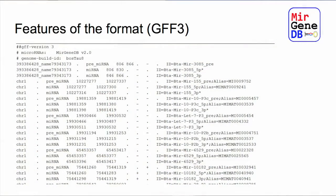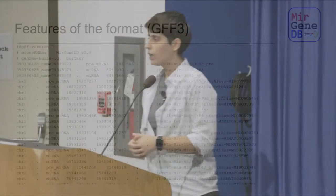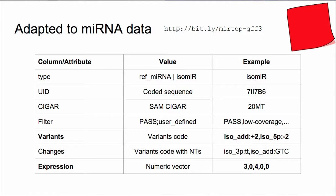We didn't invent something from scratch — we reused standard formats. We adapted GFF3, and GTF can work as well. This is an example from MirGinDB: the first columns contain information about positions and the source database, while the last column — attributes — is where we adapted things to fit our data. If you want to know all the attributes, you can go to MIRTOP-GFF3 for the full description. The two most important attributes are the variance, which defines the isomirs when compared to the database reference, and the expression of the samples in a particular project.